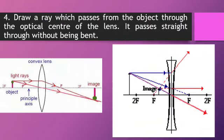Fourth, draw a ray which passes from the object through the optical center of the lens. It passes straight through without being bent.